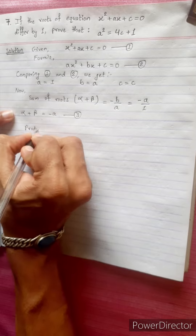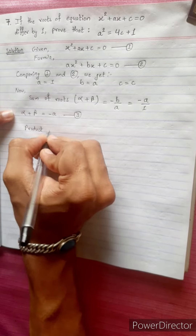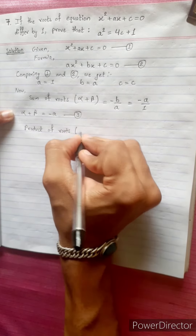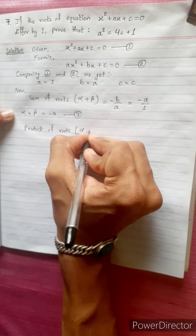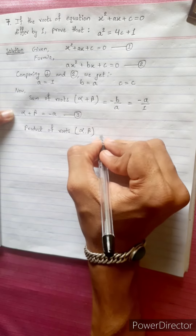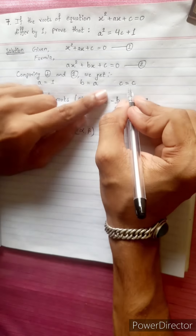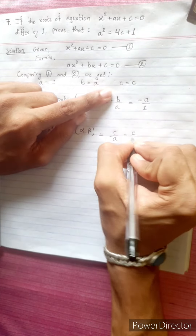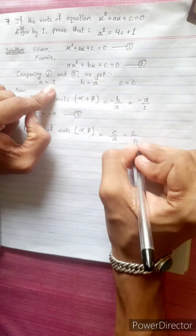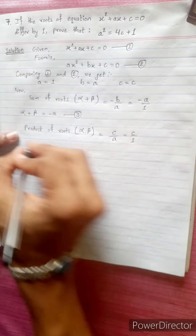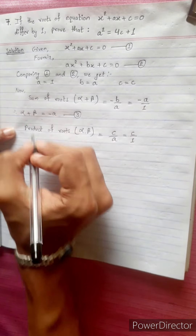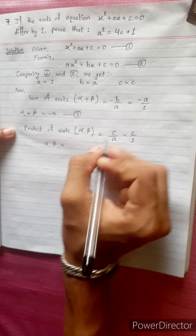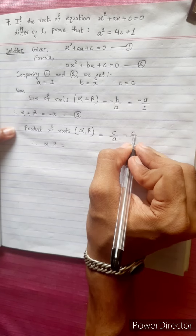Next, the product of roots: alpha into beta. The formula is C/A. Since C = C and A = 1, we get alpha into beta equals C.